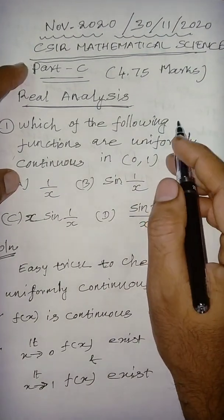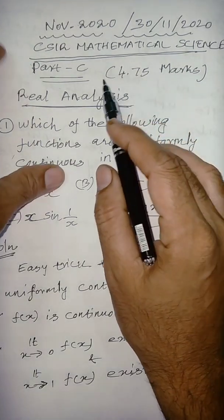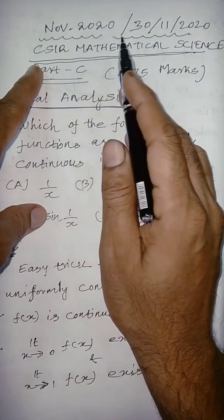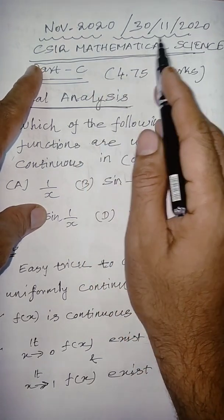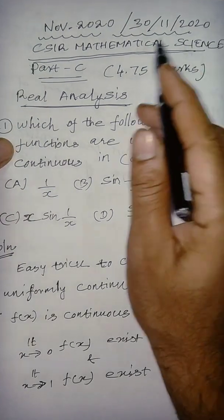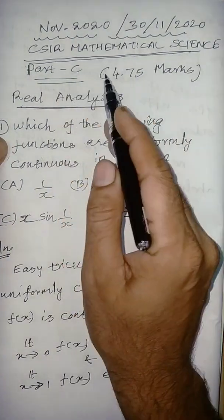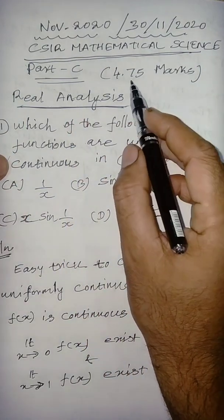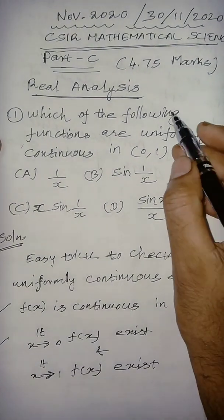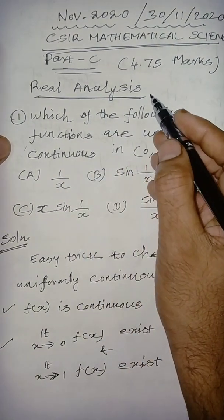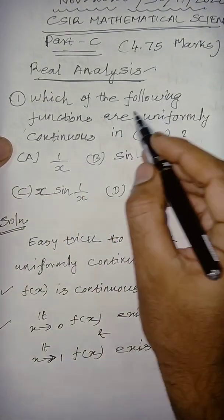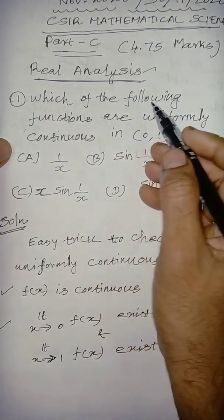Welcome. I am Krishnamar, Department of Mathematics. This is November 2020, a CSI or Mathematical Science exam, part C question. We can easily get 4.75 marks. Moreover, this is a repeated question from the real analysis topic — that is the grammar of this mathematics. The question is a very interesting one.